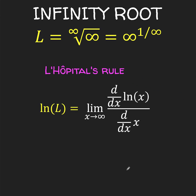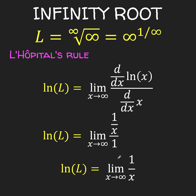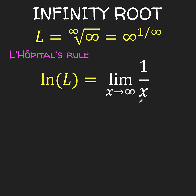Let's simplify this. The derivative of ln of x is 1 over x, and the derivative of x is 1. So 1 over x divided by 1 is simply 1 over x. Now substituting infinity for x, that gives us a value of 0, because 1 over a very large number approaches 0. So we have the natural log of l is equal to 0.